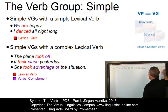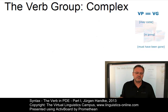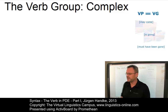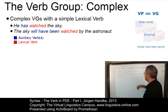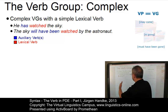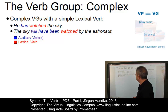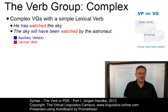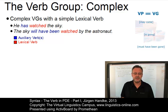If a verb group contains more than one verb, the rightmost element has to be a lexical verb, and all the other verbal elements are auxiliary verbs. For example, a complex verb group with a simple lexical verb: 'He has watched the sky' — where watched is the lexical verb. Or 'The sky will have been watched by the astronaut' — three auxiliary verbs followed by watched as the lexical verb — another example of a complex verb group with a simple lexical verb.